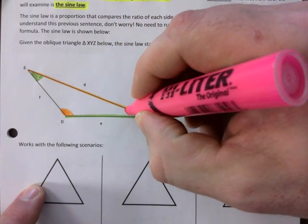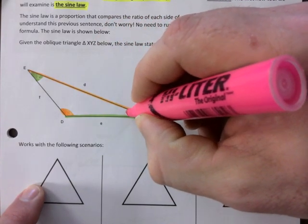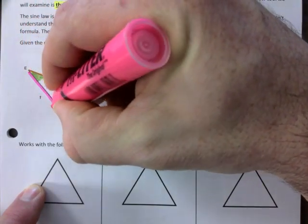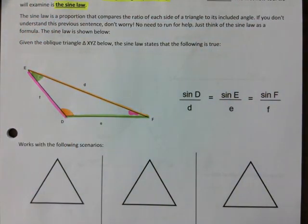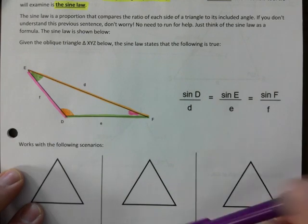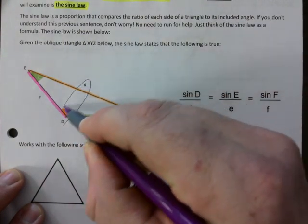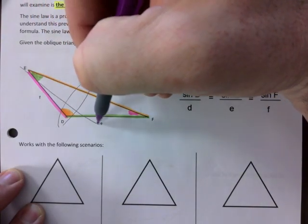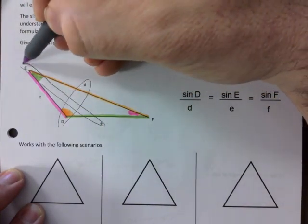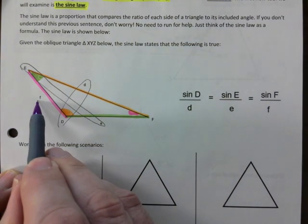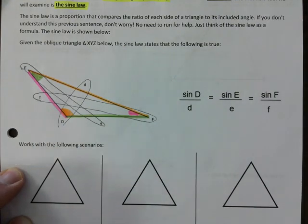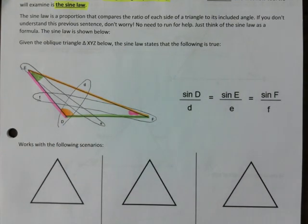And side E's across here. They're opposite to each other. And that would be exactly the same as sine of F. I'm going to use pink here. Sine of F, and so F is in this corner right here. Sine of F, and this is the side that goes with it. So you've got essentially one, two, and three pairs.